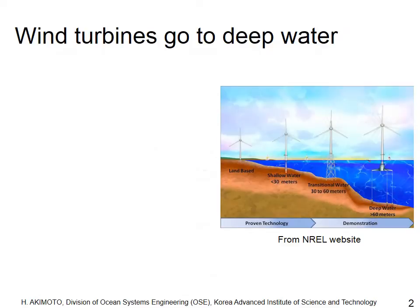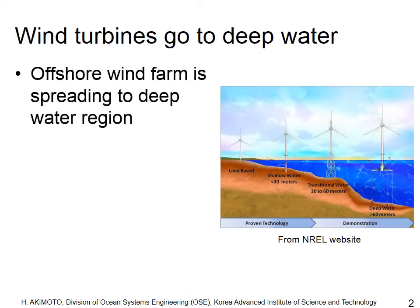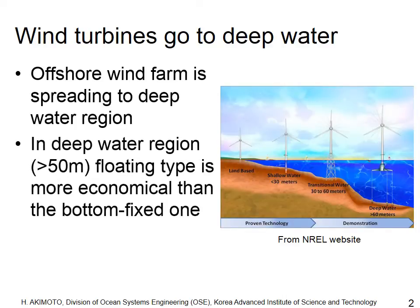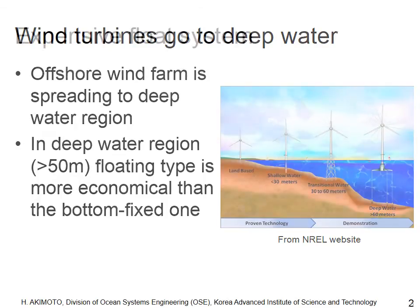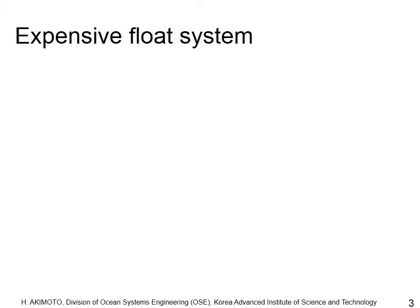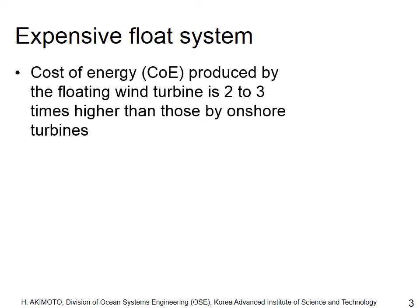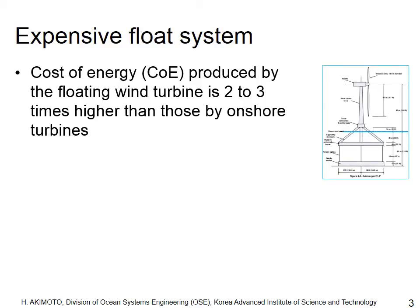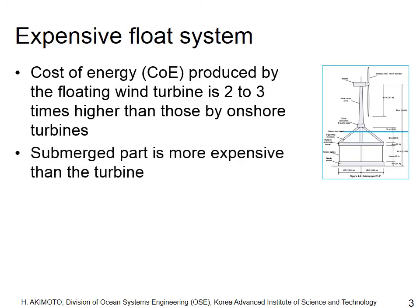The development of offshore wind farms is spreading from shallow water to deep water regions. If the water depth is higher than 50 meters, a floating type is more economical than the bottom-fixed one. However, the cost of energy produced by floating wind turbines is much more expensive than that of onshore wind turbines, because the float system of the wind turbine is very expensive.